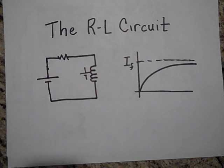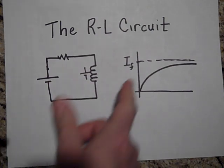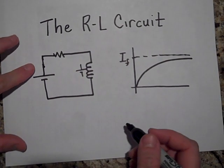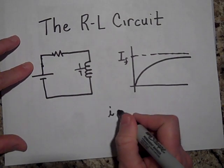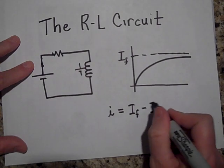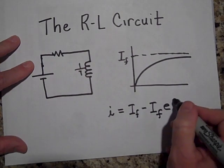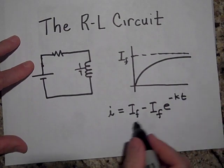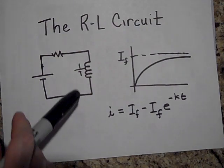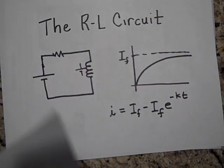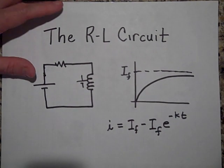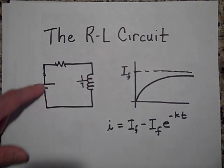Let me show you how to calculate what I should be. If you notice, that's a growth graph, so I is apparently going to be equal to some final value I_final minus I_final times e to the negative some constant times t. I should get some form like this for the current. The way I'm going to derive this equation is by using Kirchhoff's loop rule.